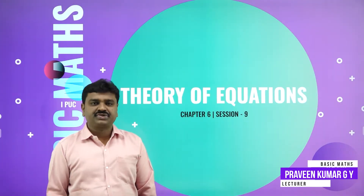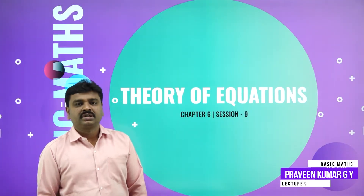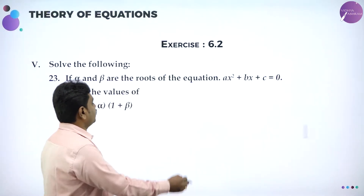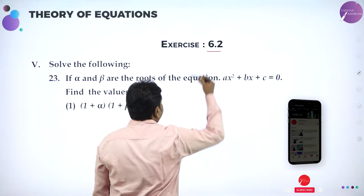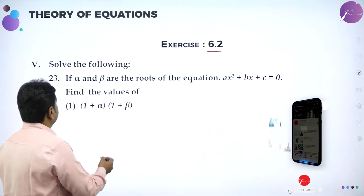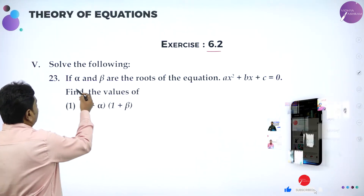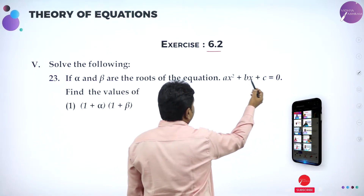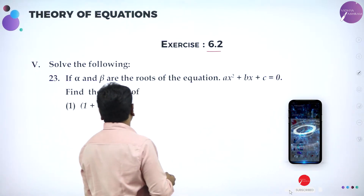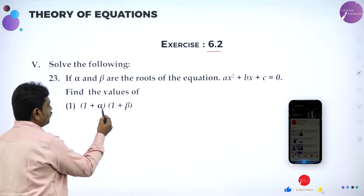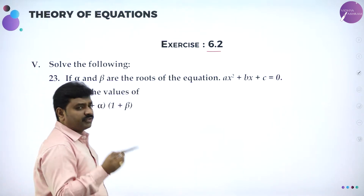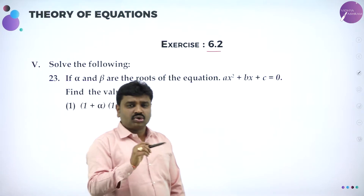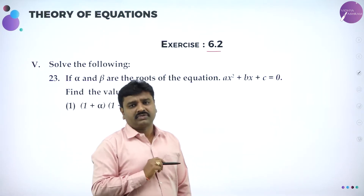Welcome to the session, dear students. Today I will go ahead with problems of theory of equations, Exercise 6.2. If alpha and beta are the roots of the equation AX squared plus BX plus C equal to 0, then find the value of 1 plus alpha into 1 plus beta. Before we go to this, the very first basic you should know: sum of the roots and product of the roots.